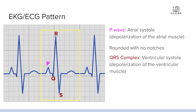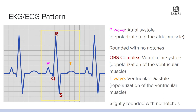Then we've got the QRS complex, and this is ventricular systole — the depolarization of the ventricle muscles. That's the QRS. Then next up we've got the T wave, which is ventricular diastole — the repolarization of the ventricle muscles — which basically just means that it's relaxing. This should be slightly rounded with no notches.